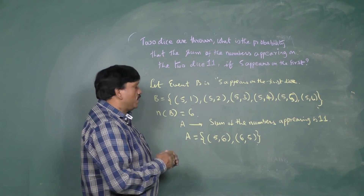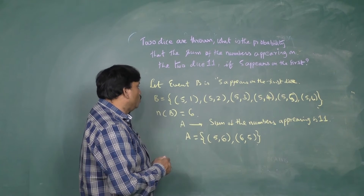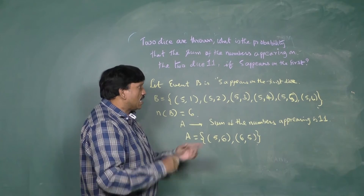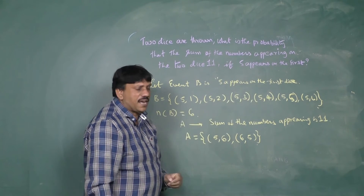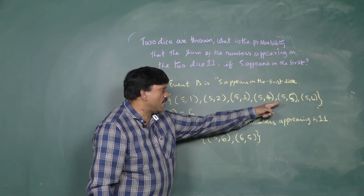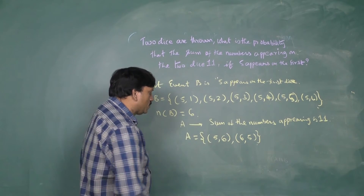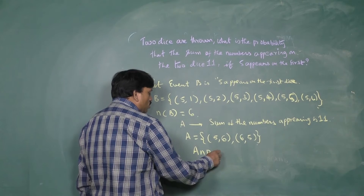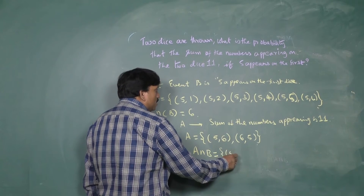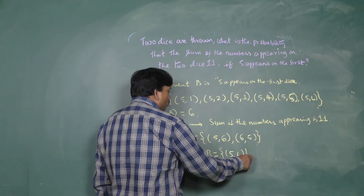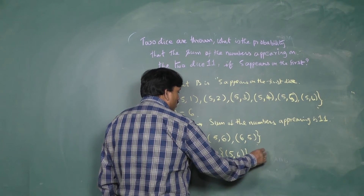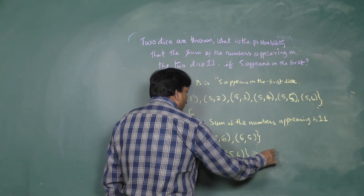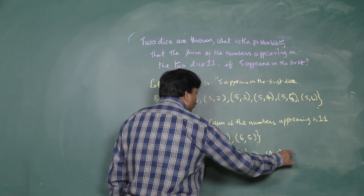Now we take the intersection of sets A and B. The condition is that five appears on the first die, so from set A only (5,6) satisfies this. Therefore A intersection B = {(5,6)}, and N of A intersection B equals one.